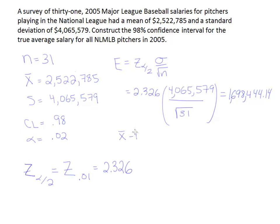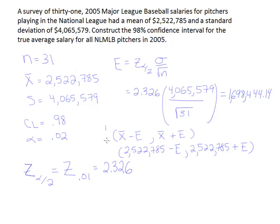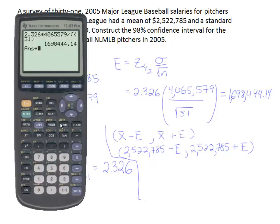Our interval is x-bar minus error to x-bar plus error. To fill that in, we take the sample mean of 2,522,785, subtract off the error we just found, and then add the error for the upper bound. I'm going to store this error in my calculator as x so I don't have to keep typing it in. Then I do 2,522,785 minus x, hit enter, and there's the first part of the answer.